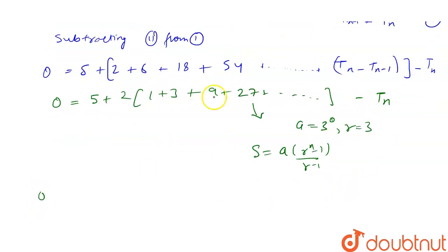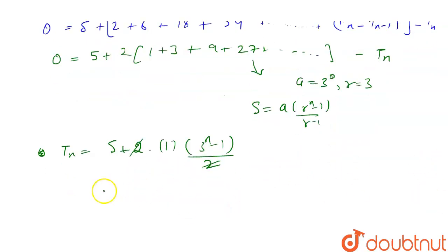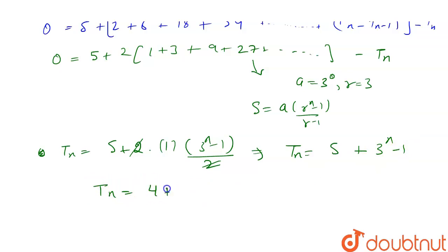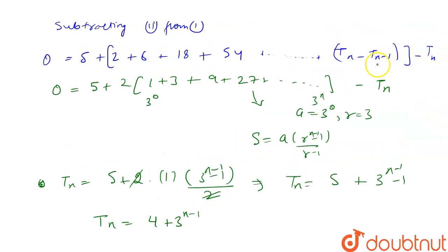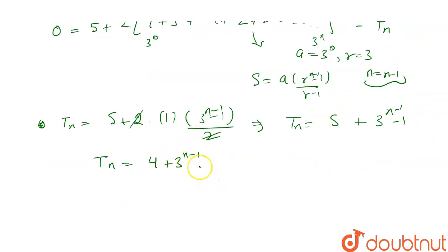Now Tn will come to the LHS. So Tn is equal to 5 plus 2 into A is 3 to the power 0, that is 1, and R is 3. So 3 to the power N minus 1, divided by 3 minus 1, that is 2. The 2 and 2 get cancelled. So Tn is equal to 5 plus 3 to the power N minus 1, that is Tn is equal to 4 plus 3 to the power N minus 1. As this series includes N minus 1 terms, the value of N in the formula is N minus 1, so the answer is 4 plus 3 to the power N minus 1.